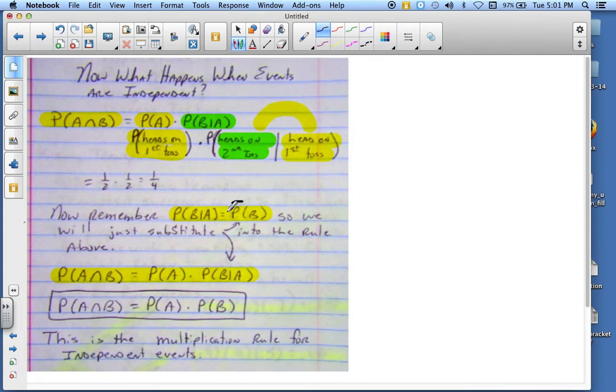this little part right here, the probability of B, since probability of B is equal to the probability of B given A during an independent event, we're just going to replace that right there. And what I end up getting is the probability of A times the probability of B is equal to the probability of A and B.